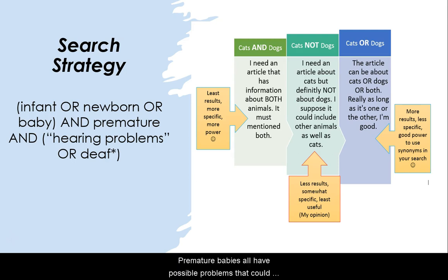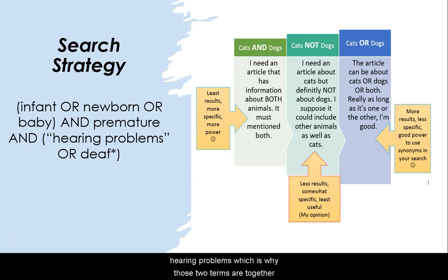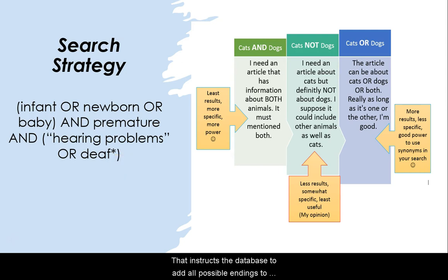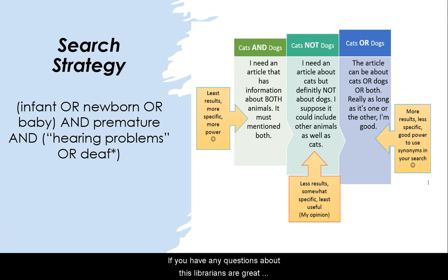Premature babies can have many possible problems — hearing problems, growth problems, etc. — but I'm looking specifically at hearing problems. That leads me to the asterisk after the word 'deaf' in my search strategy. That instructs the database to add all possible endings to that word; hence, 'deaf' or 'deafness' will automatically be searched by the database. If you have any questions about this, librarians are great at building search strategies and we are more than happy to help.